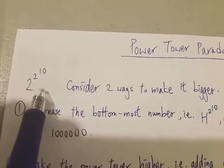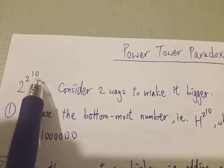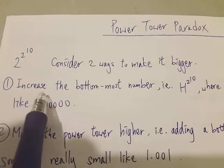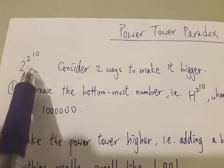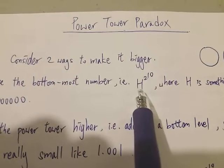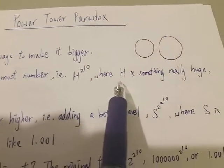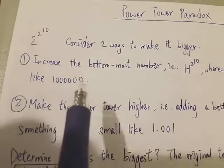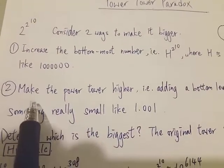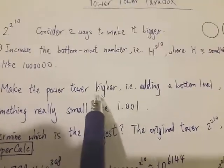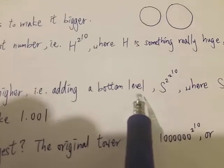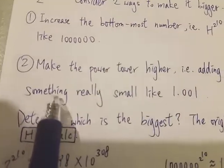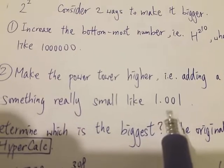So let's look at a power tower: 2 to the 2 to the 10. Consider two ways to make it bigger. The first way is to increase the bottommost number, which is the bottom 2. We define that as H, where H is something really big — for example, a million. The second way is to make the power tower higher, by adding a bottom level such as S to the 2 to the 2 to the 10, where S is something really really small — for example, 1.001.